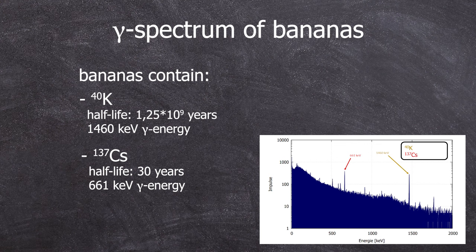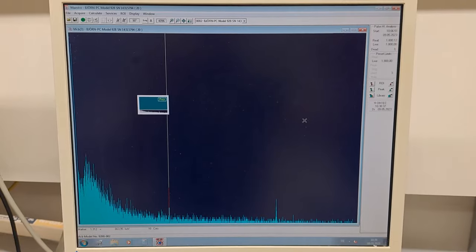So in conclusion, you can clearly see that bananas contain potassium-40 and even trace amounts of cesium-137. There will be an upcoming video next week where I go into further details of how much of each radioisotope is in these bananas. With that being said, the experiment was a success, so goodbye!